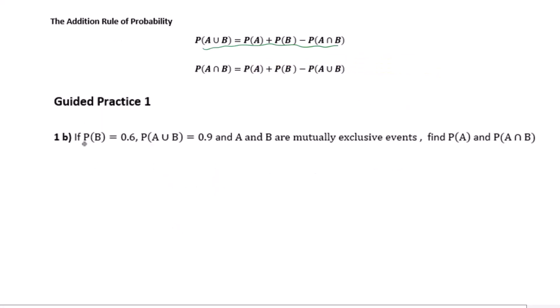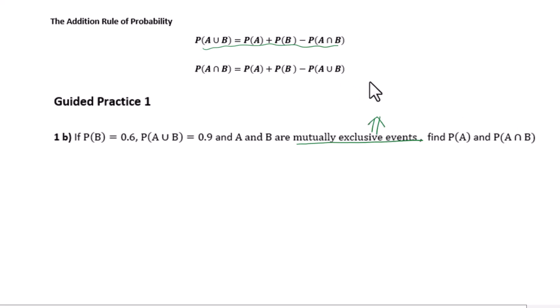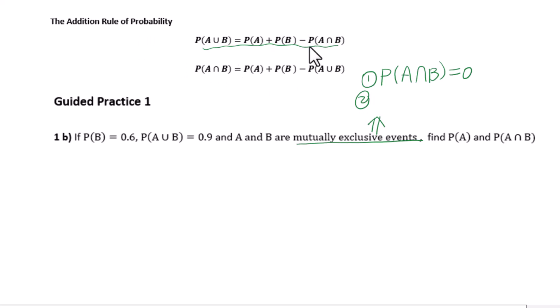Let's go to 1b. If P(B) equals 0.6 and P(A∪B) equals 0.9, and A and B are mutually exclusive events, find P(A) and P(A∩B). Mutually exclusive events mean two things: first, P(A∩B) equals 0; second, from the addition rule, if P(A∩B) equals 0, then P(A∪B) equals P(A) plus P(B).